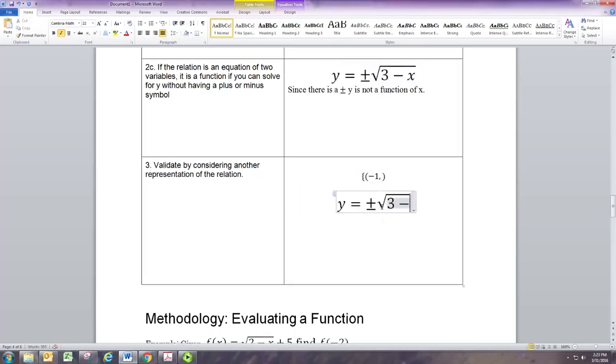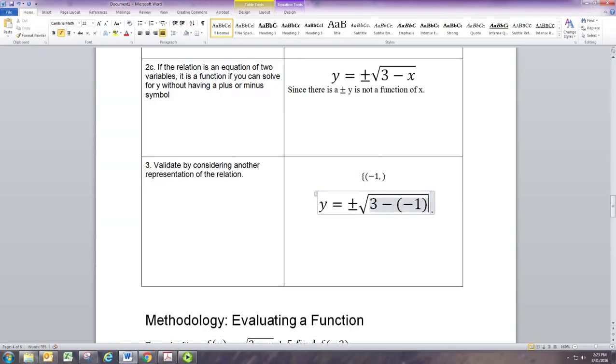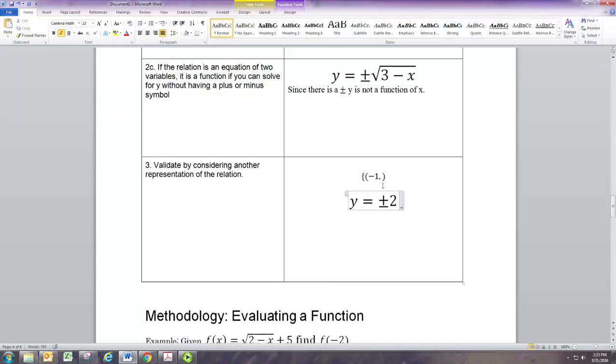So if x is negative one, then this is three plus one, which is four. And this is square root of four, which is two. And so y could be positive two or negative two. So part of the set of ordered pairs here includes these two ordered pairs. And remember, we can't have set of ordered pairs where one input here, negative one, gives us two outputs. Here, negative two and positive two.